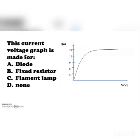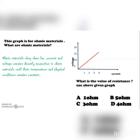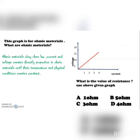The current-voltage graph is made for: diode, fixed resistor, filament lamp, or none. The correct option is filament lamp. This graph is for ohmic materials. In ohmic materials, current and voltage remain directly proportional until their temperature and physical condition remain constant. The value of resistance from the graph — options 1 ohm, 5 ohm, 3 ohm, or 4 ohm — the correct option is 5 ohm.